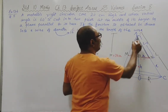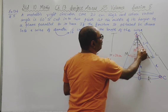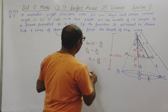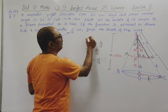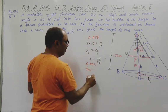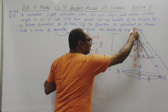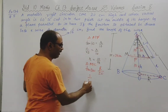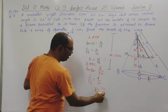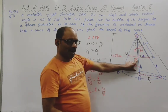Similarly, in triangle AOC, angle A is 30 degrees, the opposite side OC is capital R, and the adjacent side AO is 20. So tan 30 equals R upon 20, giving 1 upon root 3 equals R upon 20. Therefore capital R is equal to 20 upon root 3.